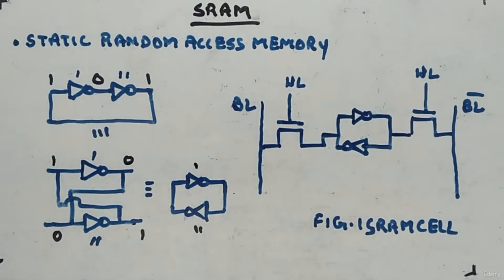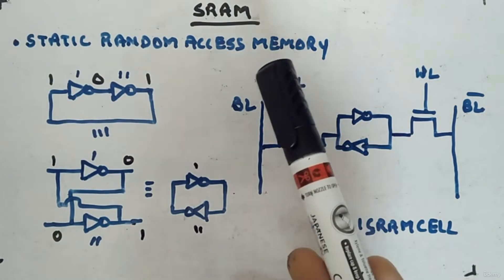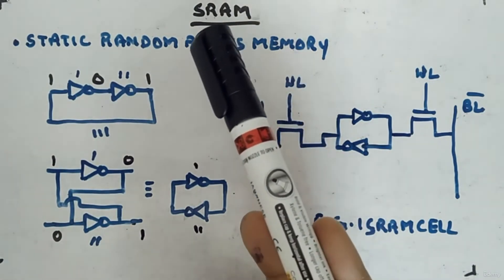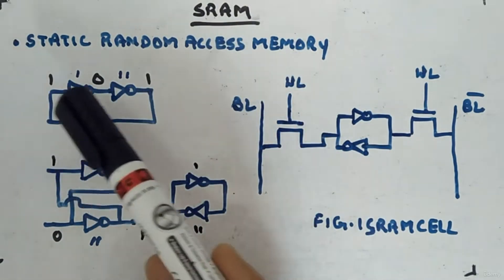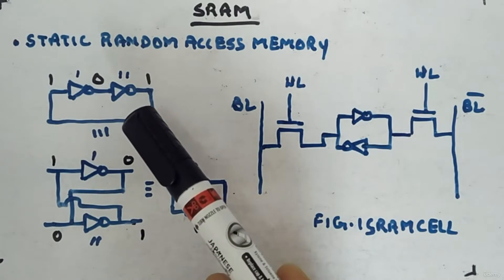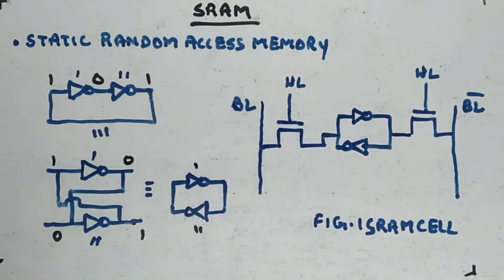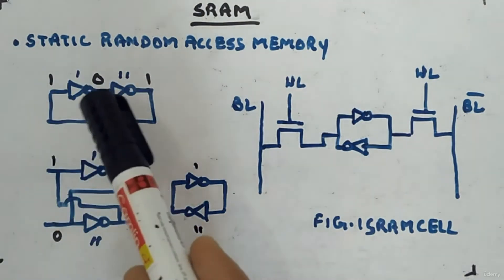Here you can see SRAM. SRAM stands for Static Random Access Memory. Here you can see a structure made with not-gates connected back to back. If you connect an odd number of inverters it will make a bistable multivibrator.